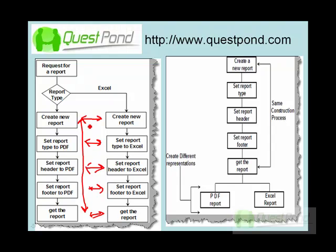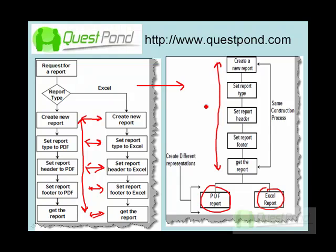Looking at the final output, I have one in PDF format and one in Excel format — these are my two different representations. Here is my construction. The figure on the left-hand side is a more combined one, but on the right-hand side I have broken the same thing into constructions and representations, which makes the logic more clear.